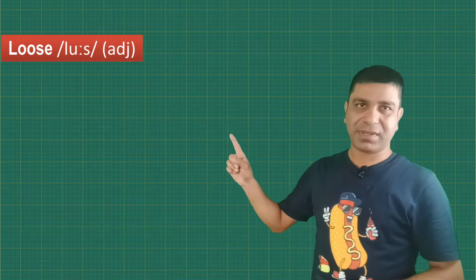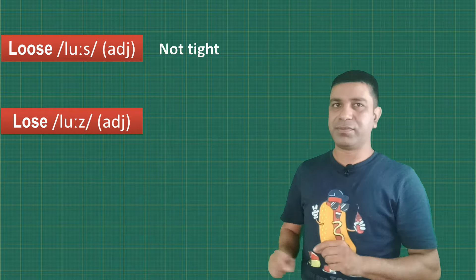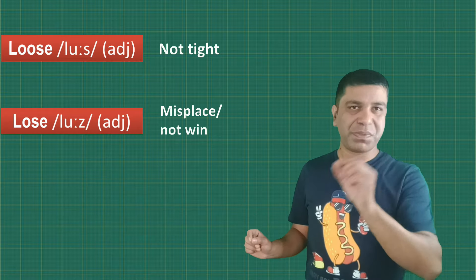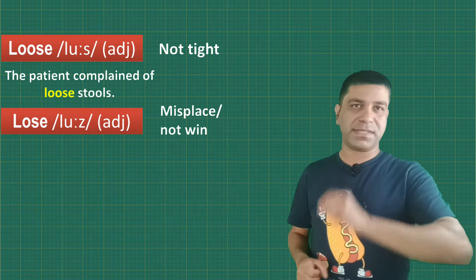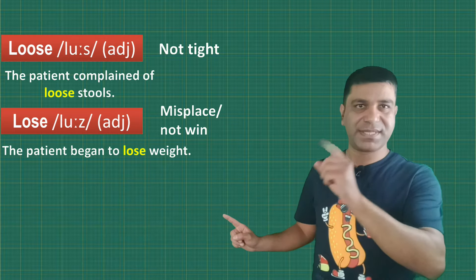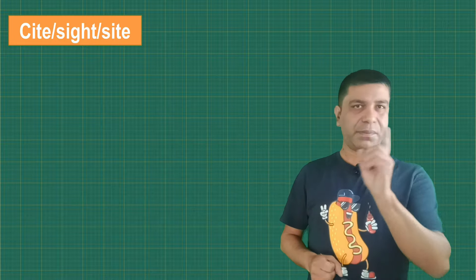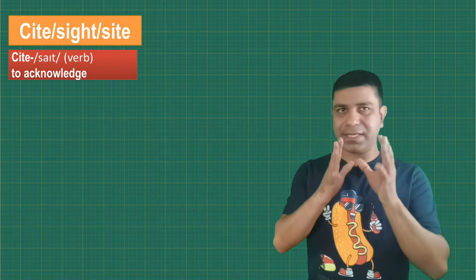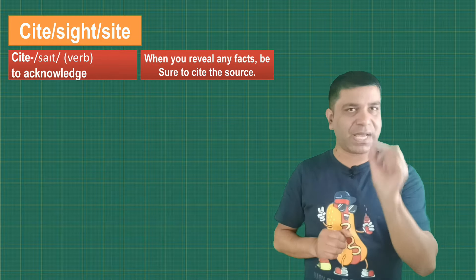Have you heard of troublesome twosomes? These troublesome twosomes are some more examples of homonyms. Take a look: loose and lose — the meaning of loose is 'not tight' and the meaning of lose is 'to misplace or to not win.' For example, 'The patient complained of loose stools and the patient began to lose weight.' Another example: cite, sight, and site. The meaning of cite (C-I-T-E) is 'to acknowledge.' When you reveal any fact, be sure to cite the source.